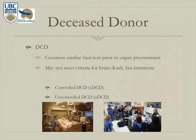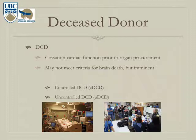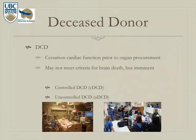Donation after cardiac death occurs when there's cessation of cardiac function prior to organ harvesting. It may or may not meet criteria for brain death, but once the heart stops, there is warm ischemic time for all organs. In controlled DCD, the patient is on life support, taken off, and brought immediately to the OR. In uncontrolled DCD — such as an emergency room cardiac arrest — there's more warm ischemic time and a much worse prognosis.